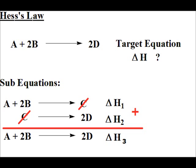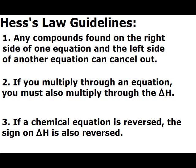There are three things that become important when doing Hess's Law. Number one: any compound found on the right side of one equation and the left side of another can cancel out in a one-to-one ratio — just like C in the previous example, where one mole of C on the right and one mole on the left cancelled each other out. Number two: you can multiply through an equation, but if you do, you must also multiply the delta H by that value. For example, if you only have one C on the right but need two Cs to match the next reaction, you multiply the first reaction by two — and that means doubling the delta H as well.